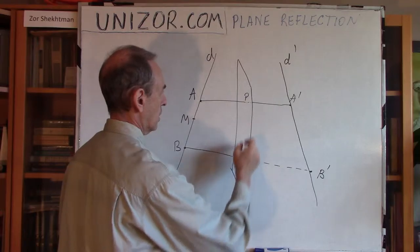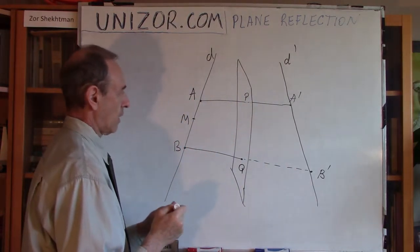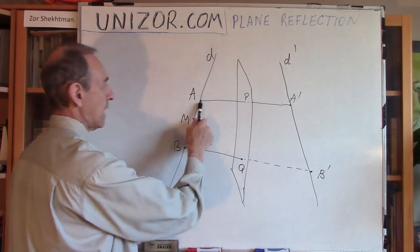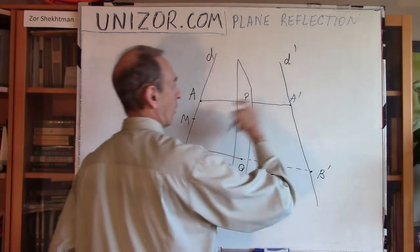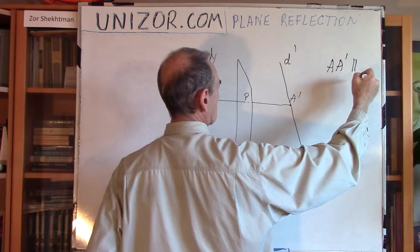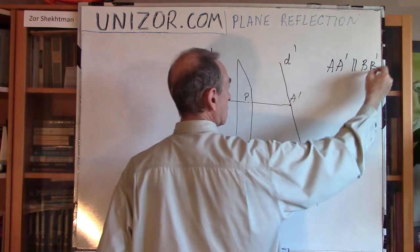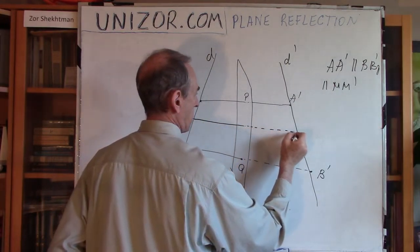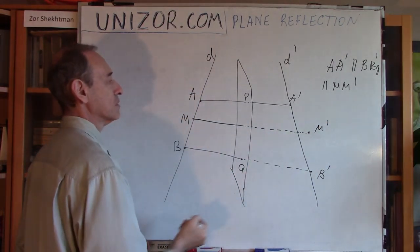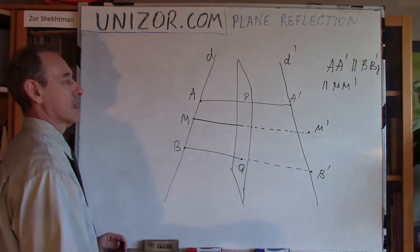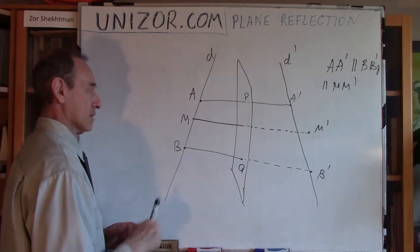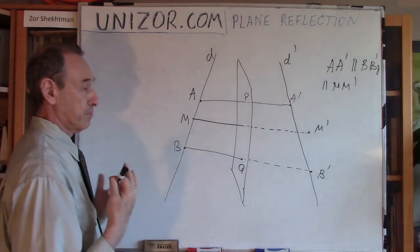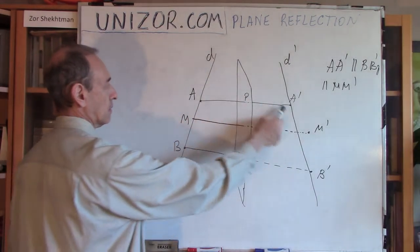My first statement is that I would like you to recall that all perpendiculars to the same plane are parallel to each other, which means AA prime is parallel to BB prime, and it's also parallel to MM prime. I can assume M prime is not falling on the line A prime B prime and then come to some kind of a contradiction. Since AA prime and BB prime are parallel to each other, I can draw a plane through them, because two parallel lines lie in the same plane. Let's call this plane beta.